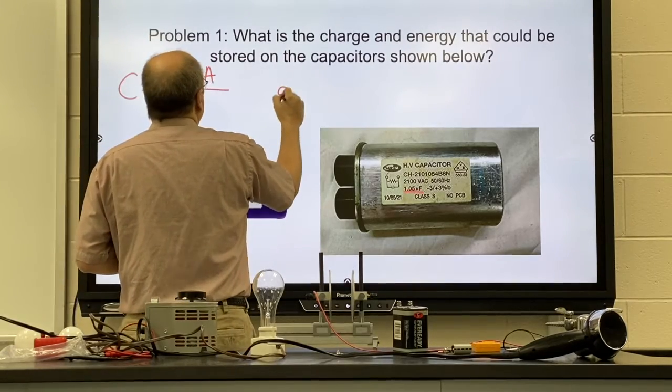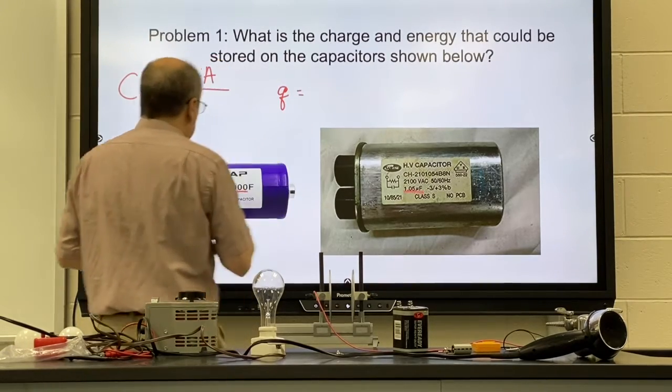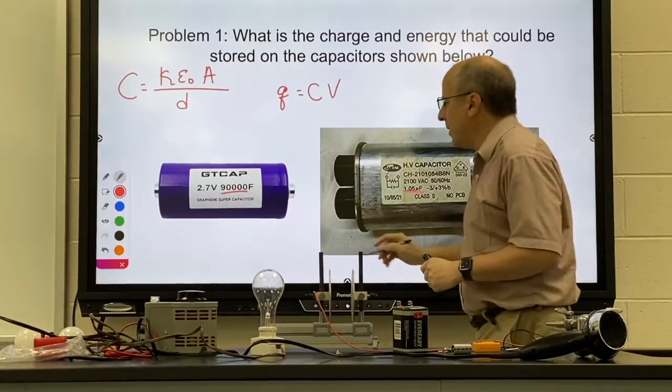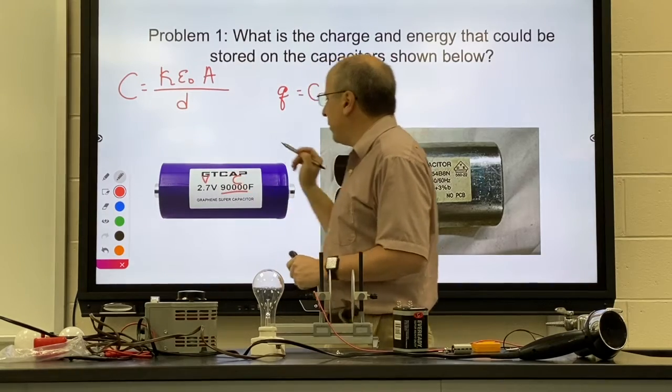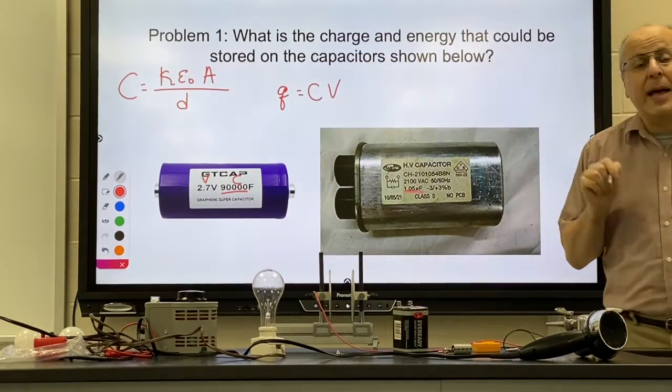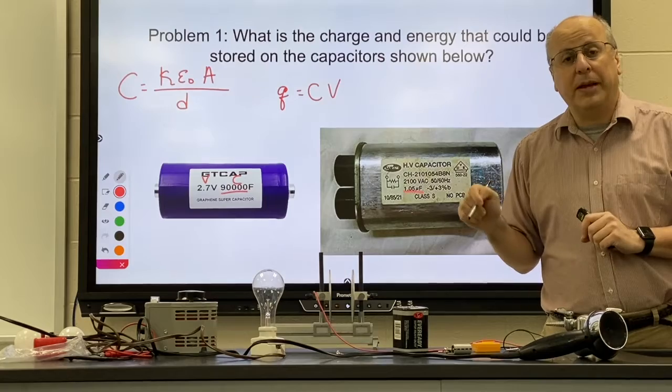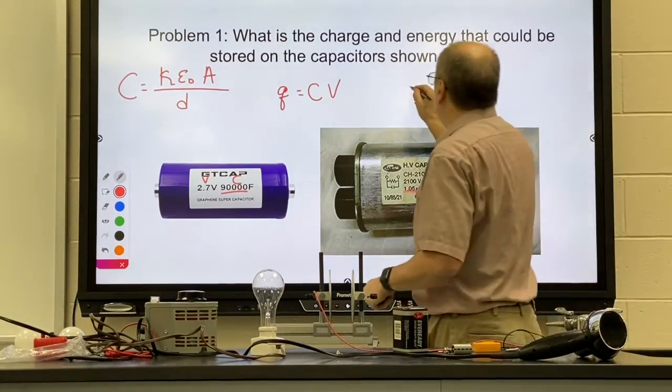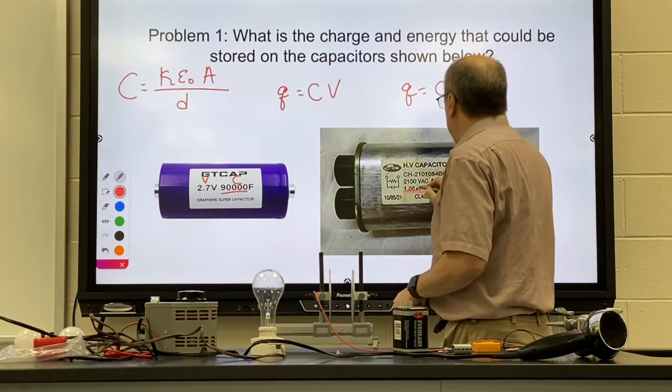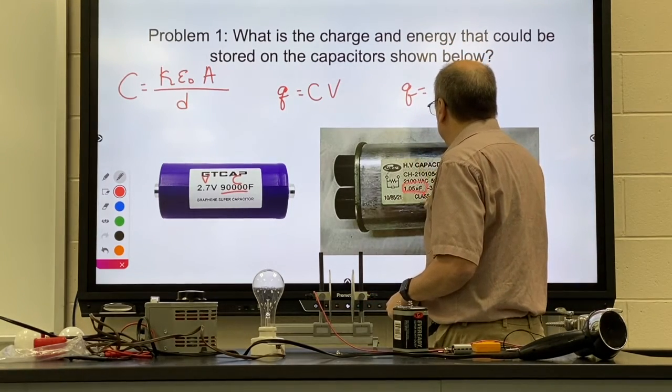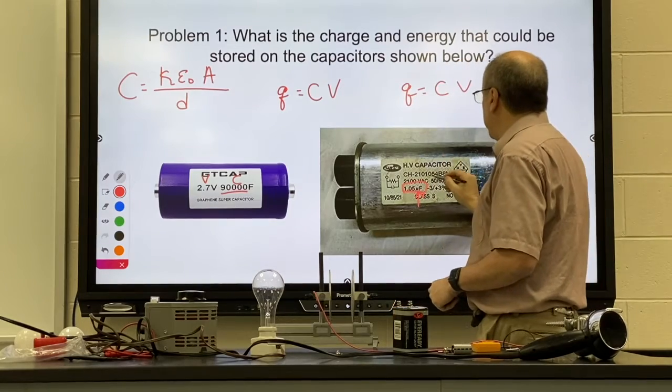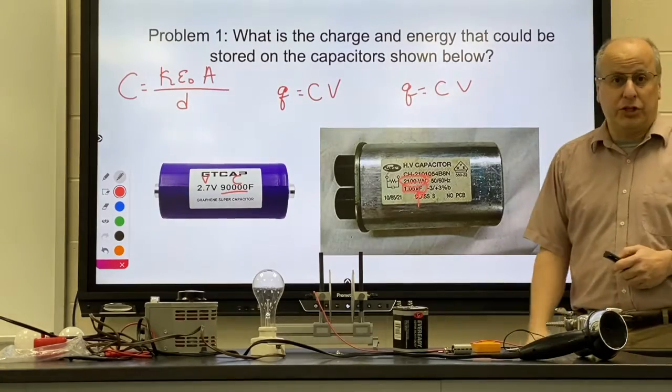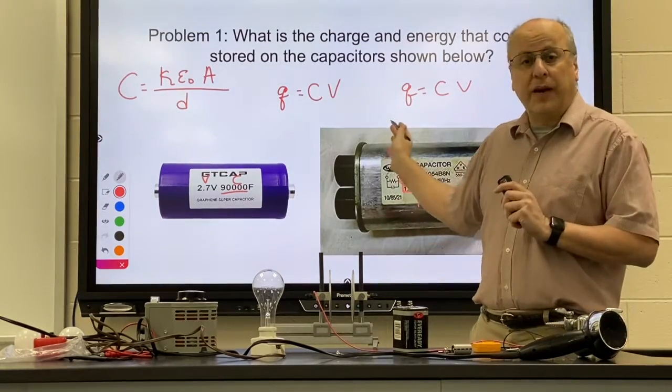Now we want to hook these things up, so we use charge equals CV. Here's your capacitance, here's your voltage. Remember that's the maximum voltage you're supposed to be able to put on the capacitor, so that's what we're going to use. For this one, you're doing the same formula. Make sure you change it from micro to normal farads, and then make sure you use your 2100 volts as your voltage. So again, you're just finding how much charge can be stored.